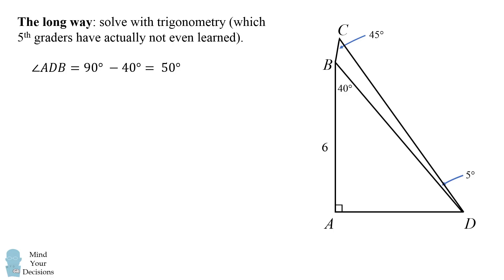First we'll solve that angle ADB is equal to 50 degrees and then angle DBC is equal to 130 degrees. Next we'll calculate that the length of AD is equal to 6 times the tangent of 40 degrees. Then the length of BD is equal to 6 divided by the cosine of 40 degrees.